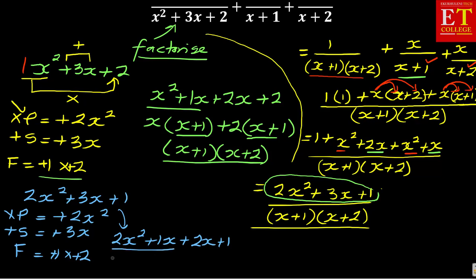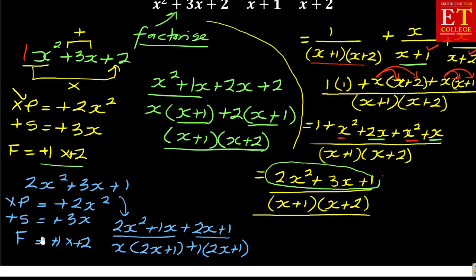You look at the first 2, x is common. You'll have x(2x + 1). Already you can see that we've got 2x + 1. So you take out a 1, so that it remains as it is, as 2x + 1. In the brackets, I have got 2x + 1, and I have got outside the bracket, the x + 1. This is what is going to be this particular numerator.